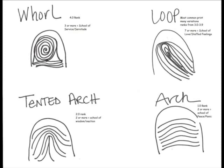You need three whorls to qualify for the school of service to be in that school, and you need four to definitely be in that school. So looking at all ten fingerprints on a person's hands, you would need a minimum of three to be in the school of service, and four to definitely qualify for the school of service.